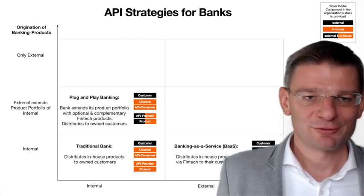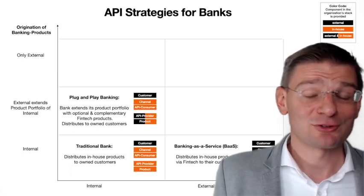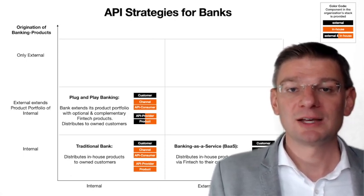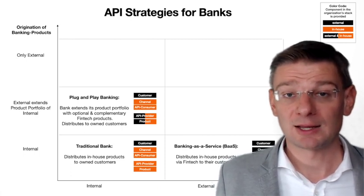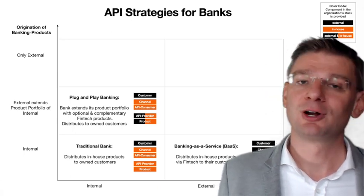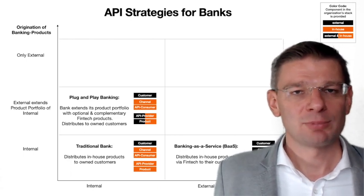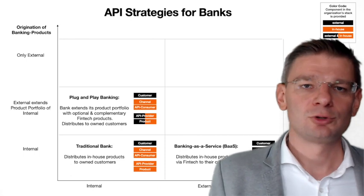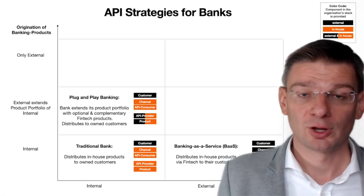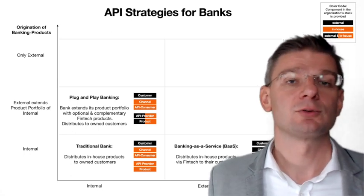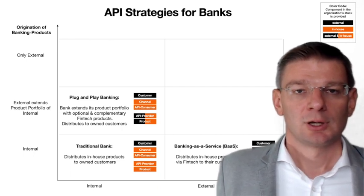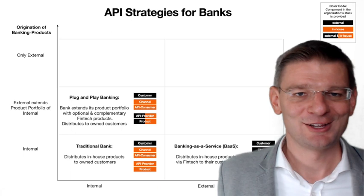Another option of reconfiguration is plug-and-play banking, which is actually more popular than banking as a service for existing banks. With plug-and-play banking, you basically extend your portfolio of banking products. If you have a gap in your portfolio — something you haven't offered so far but would like to — then plug-and-play banking is the way to go. You still own your customer and the channel, but you now source banking products from other banks or players in the industry. You don't need to have all the banking products in-house; you consume them via your own channel through an API.